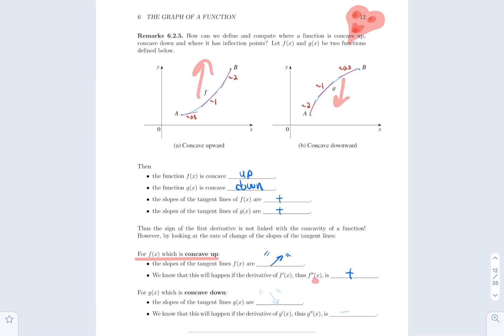For the second function g, the slopes are decreasing. This happens when the derivative function is decreasing — that is, when g″, the second derivative, is negative. If the second derivative is negative, then g′ is a decreasing function, and when g′ is decreasing, g is concave down. That's the true power of using the sign of the second derivative.